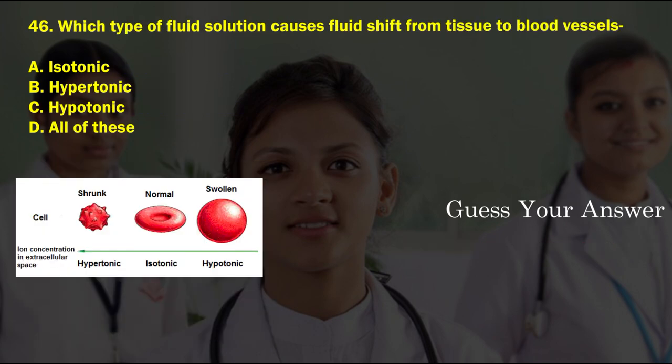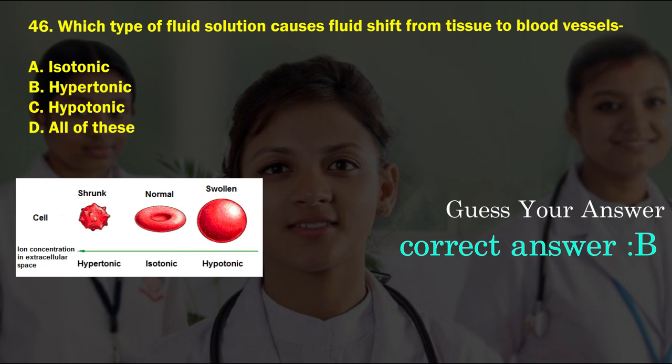Which type of fluid solution causes a fluid shift from tissue to blood vessels? Option A: isotonic, option B: hypertonic, option C: hypotonic, option D: all of these. The correct answer is option B, hypertonic.